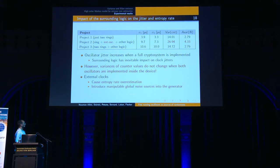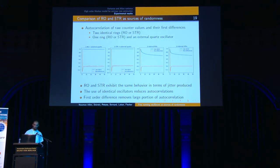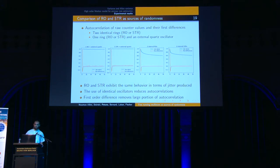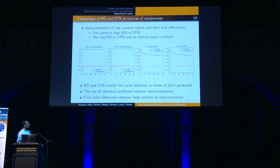When an external oscillator is used, the variance of counter values changes drastically, so entropy estimation based on this variance measurement will be overestimated and incorrect. On top of that, we introduce global noise sources into the generator when using external clocks. In the autocorrelation study, autocorrelation of counter values when using an external quartz oscillator combined with either internal oscillator is extremely high. This autocorrelation is reduced when using only two internal oscillators, and when working on first-order differences — as is the case with Allan variance — the autocorrelation is negligible.